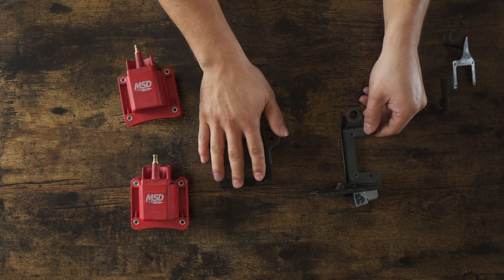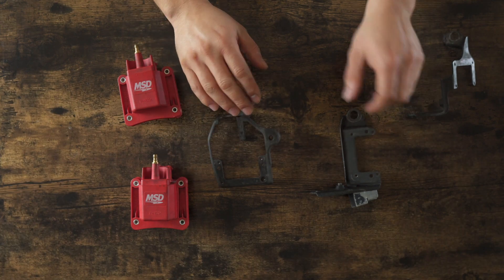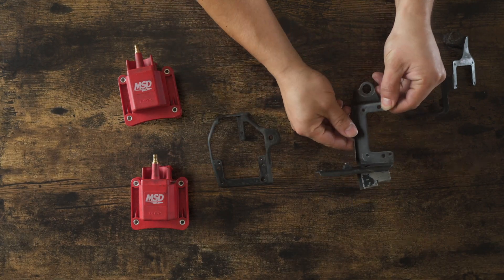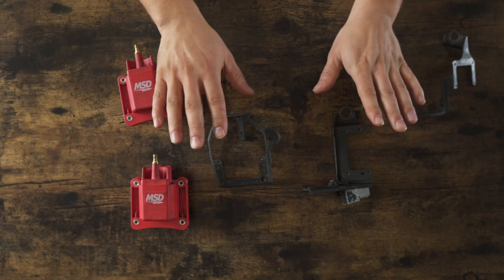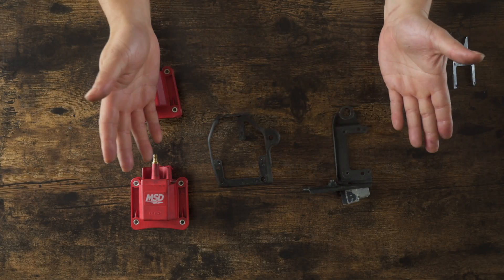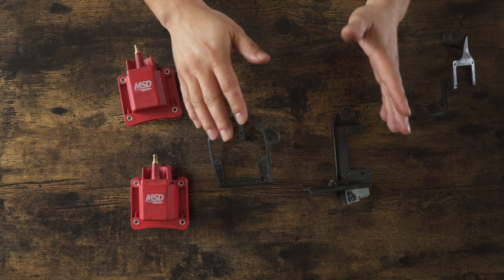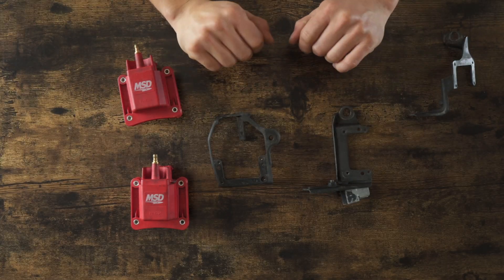Now this bracket here can be found on the passenger side, and this one can be found on the driver side. For reference, we're going to use USDM because we're located here in Orlando, Florida.